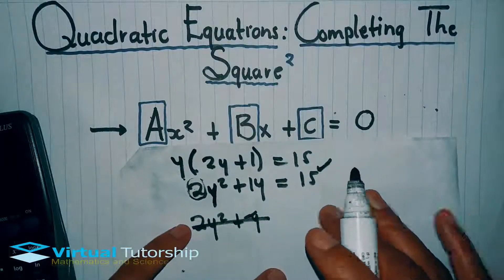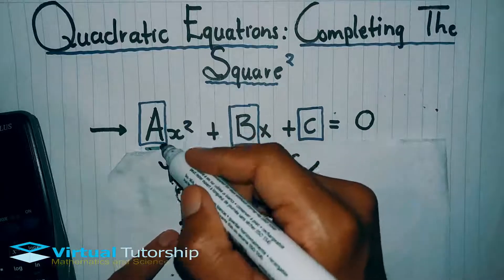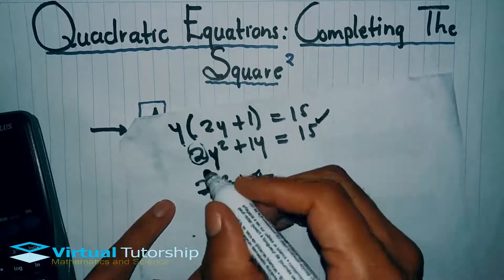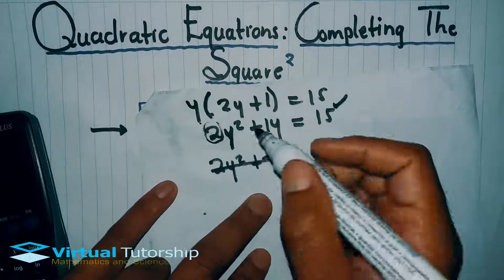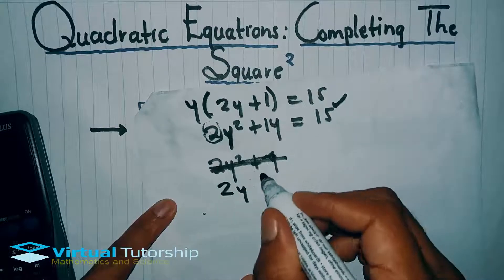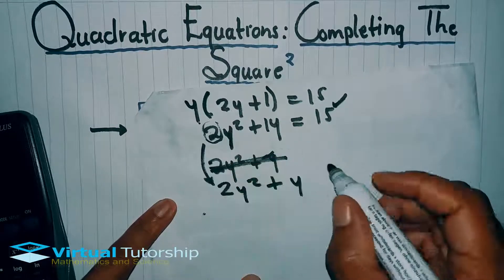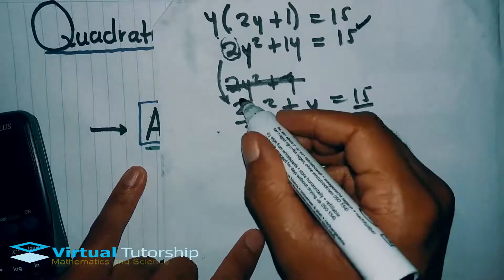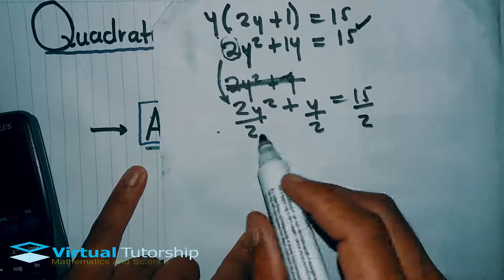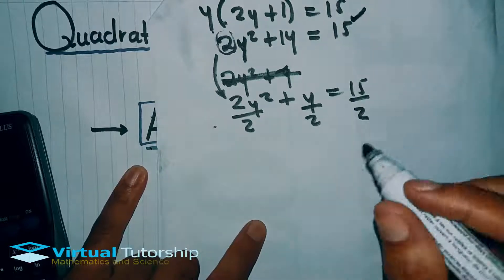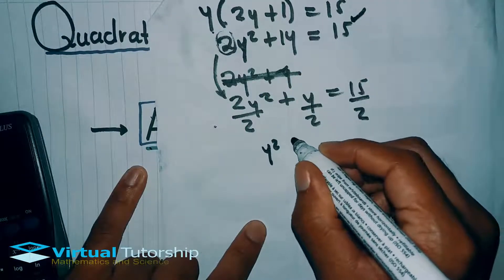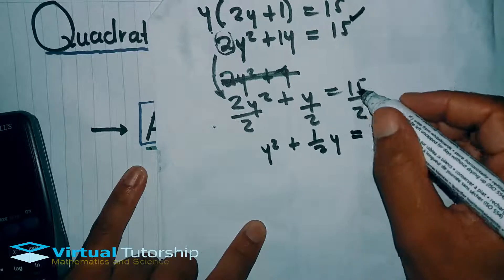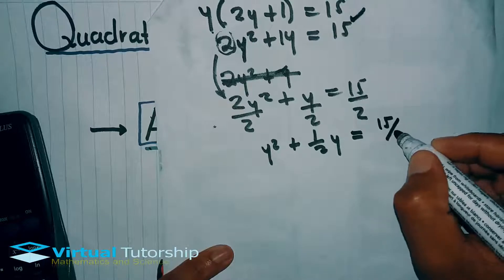Whenever completing the square, the a value must always be one. So we look at the 2y squared — the coefficient of y squared is 2, not 1. So we divide the entire equation by 2 to get y squared plus one-half y equals 15 divided by 2.